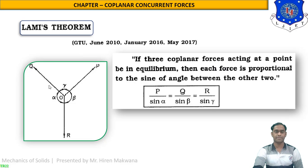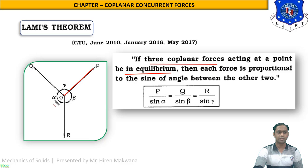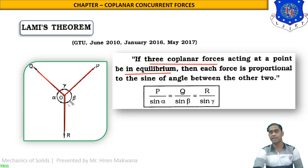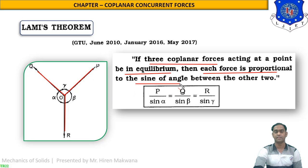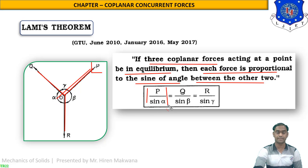The statement: if three co-planar forces acting at a point are in equilibrium — from point O, outward forces P, Q, and R are in equilibrium and the angles between the forces are alpha, beta, and gamma respectively — then each force is proportional to the sine of the angle between the other two. So P upon sine alpha, Q upon sine beta, and R upon sine gamma.